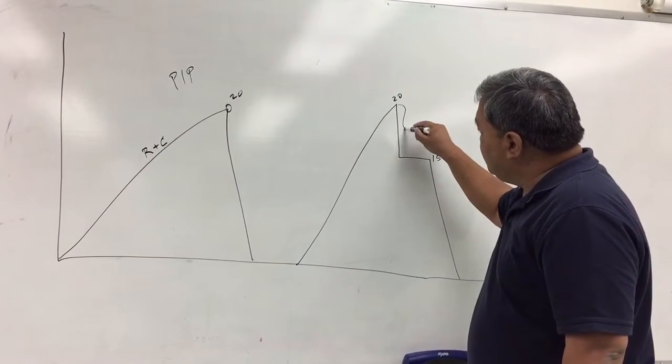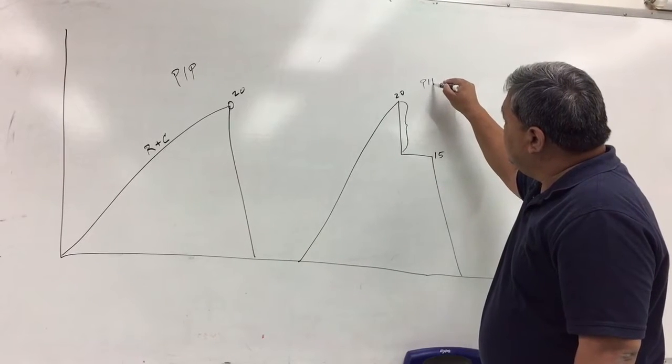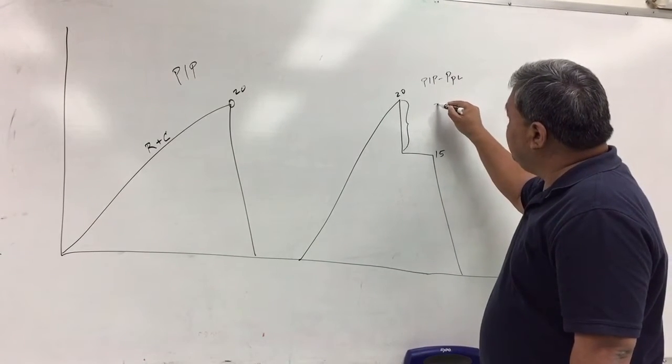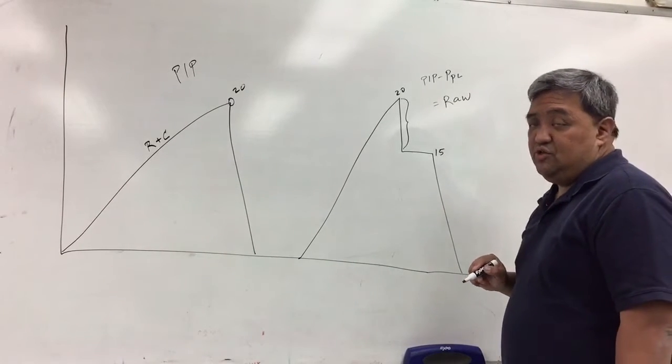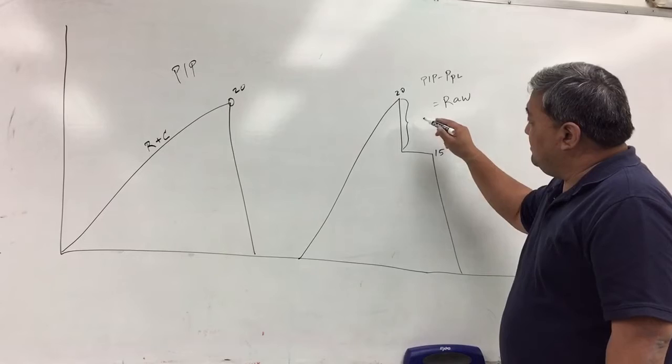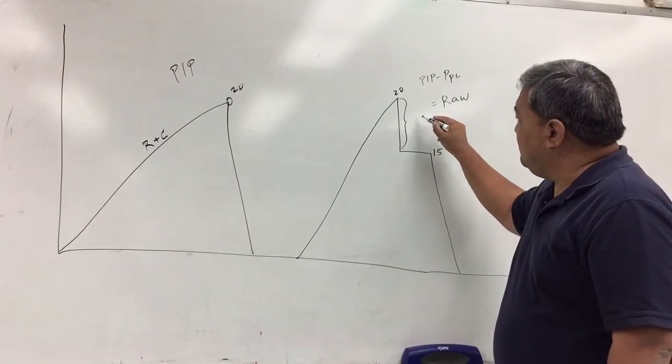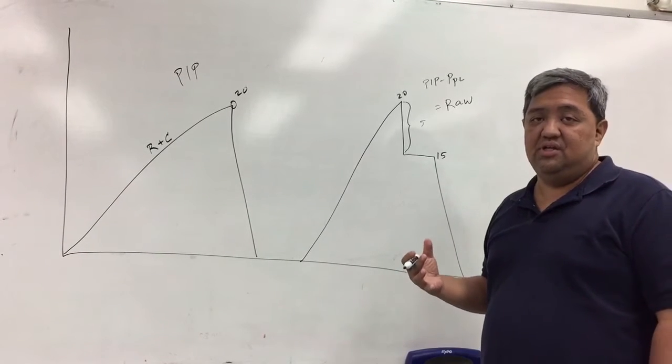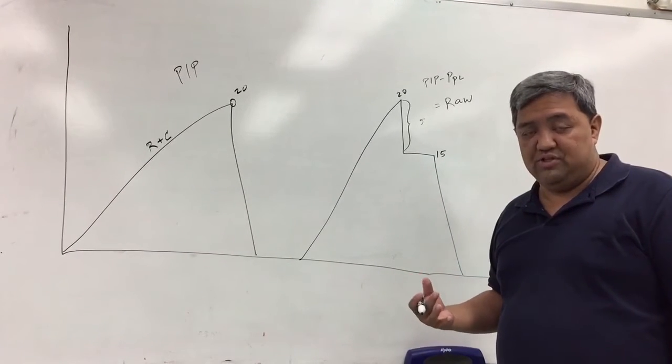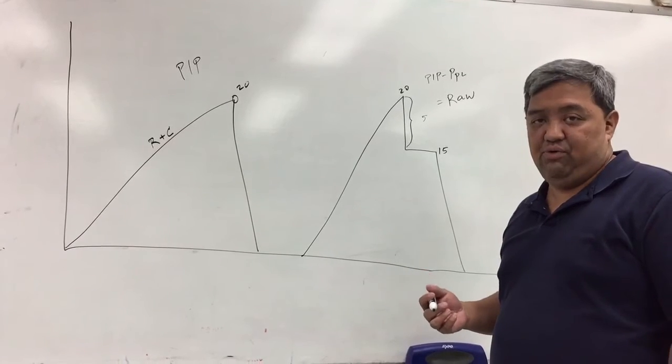The difference between the PIP and the plateau is your airway resistance. So in this particular case, on a simple calculation, the resistance in itself is about five. However, there's a separate calculation because you have to consider the flow as well in order to know the exact airway resistance.